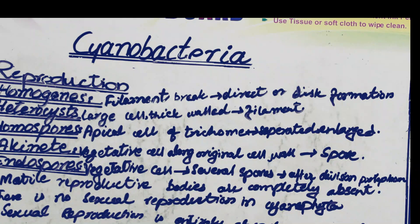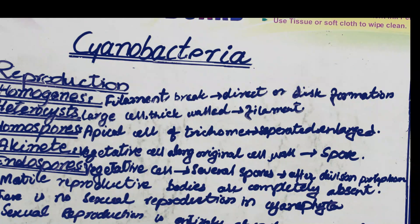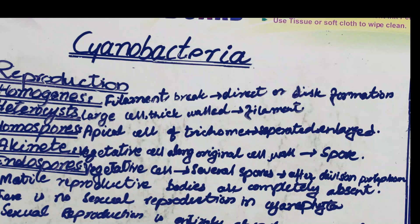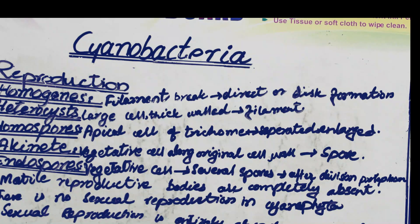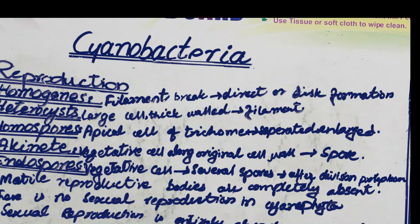The second type is heterocyst reproduction. A heterocyst is a single, distinct cell within the filament that has thicker cell walls and is enlarged compared to other cells. It is separated from the other cells, and the filament breaks at this point, giving rise to multiple new filaments. The third type is homospores — the apical cell of the filament, having the same characteristics as the filament, enlarges, separates from the trichome, and forms a new individual.